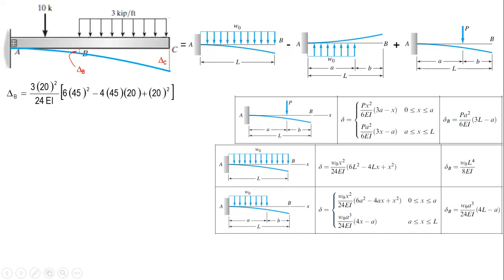For the concentrated load component acting at distance a equals 10 from the fixed support, we want the deflection at point B where x equals 20. Since x equals 20 is equal to a equals 20 for this load, we note that x is greater than a. So we use the formula for x greater than a.